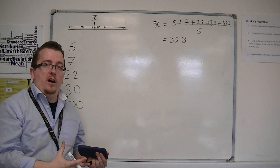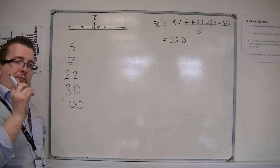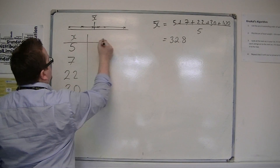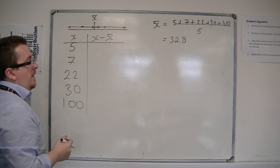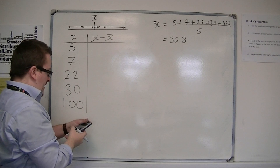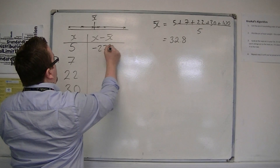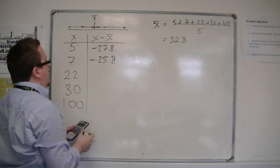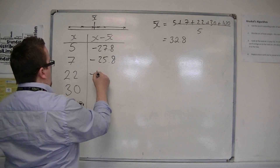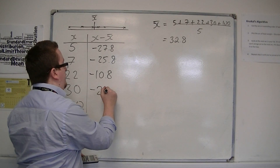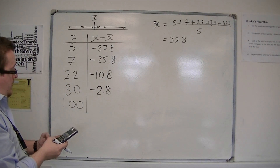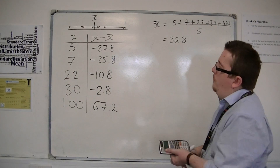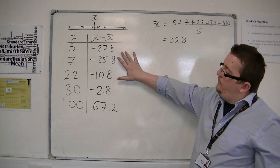So we've got our mean. Now what I want to do is find how far each of the points are away from the mean. So if these are my x's, I want to find that difference — I'm going to take the mean away from each of them. So I've got 5 take away 32.8, that's minus 27.8. Then 7 take away 32.8, that's minus 25.8. Then 22 take away 32.8, that's minus 10.8. 30 take away 32.8 is minus 2.8. And 100 take away 32.8, which makes 67.2. But these aren't telling me the distances because some of them are negative and one of them is positive.